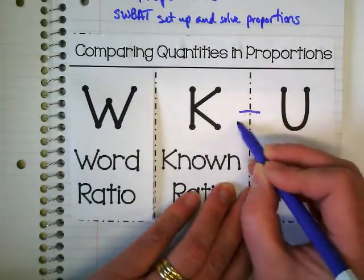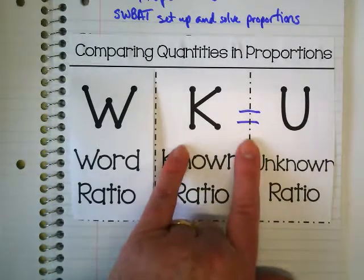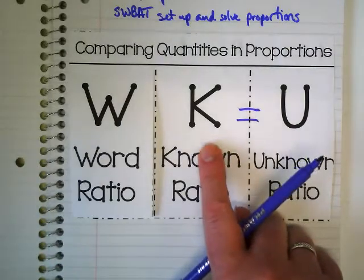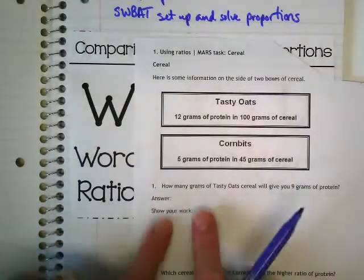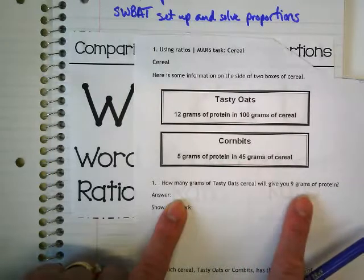These two are going to end up being equal to each other because this part is going to be our actual proportion. What do we know from our problem? This is where the known ratio comes in. In this first problem, it says how many grams of tasty oats cereal will give you 9 grams of protein?